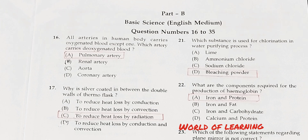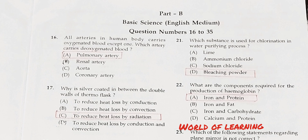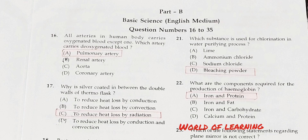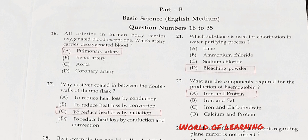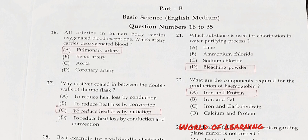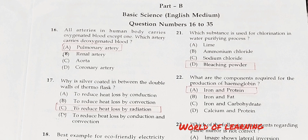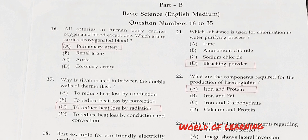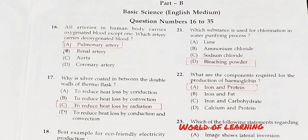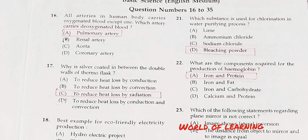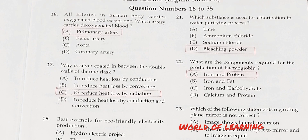Question 16: All arteries in the human body carry oxygenated blood except one. Which artery carries deoxygenated blood? Option A: Pulmonary artery. Option B: Renal artery. Option C: Aorta. Option D: Coronary artery. Correct answer is Option A, pulmonary artery.